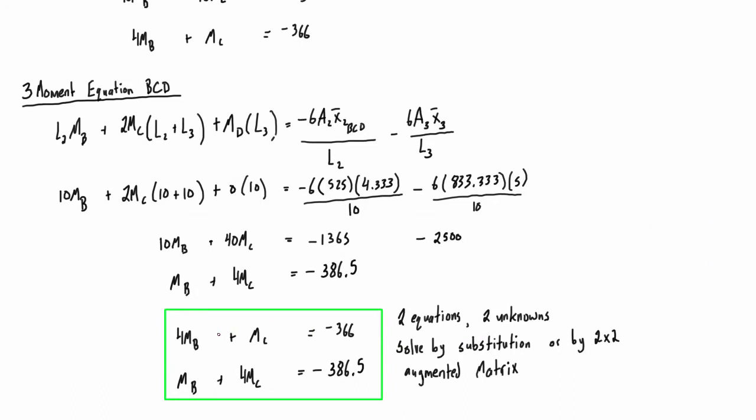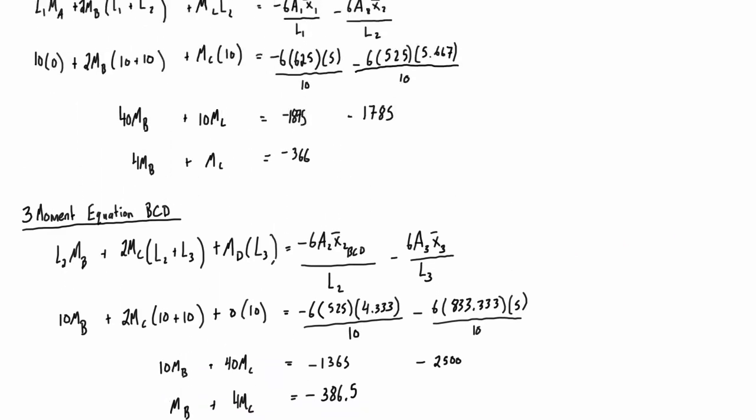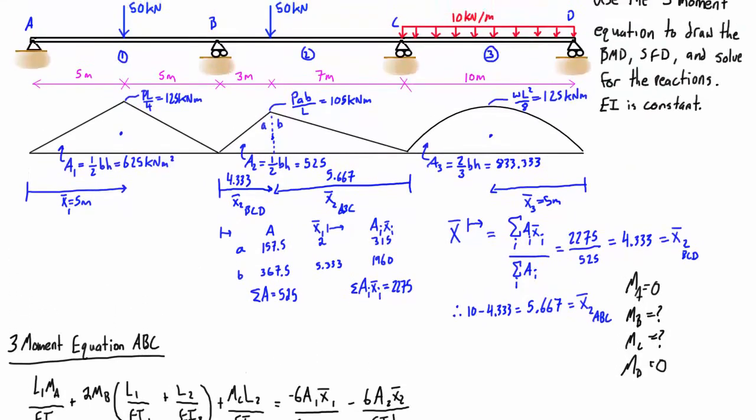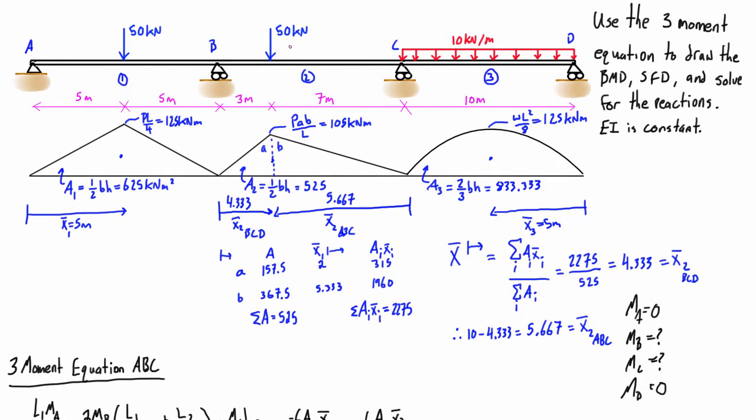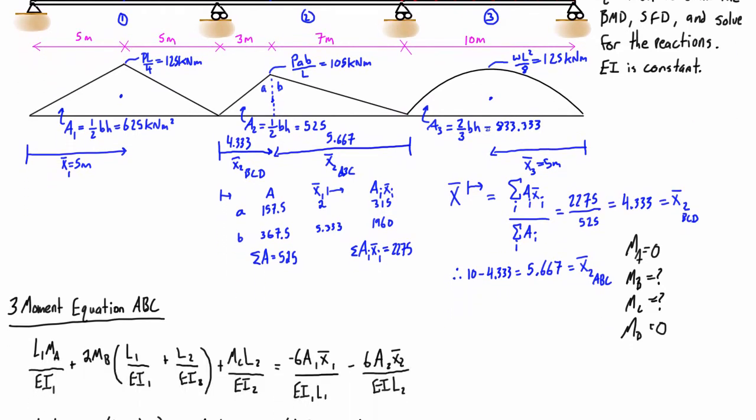Picking up right where we left off, we just found the expression where we have two equations and two unknowns for the internal moments of B and C. Just a quick recap of what we did: we had this beam up here, a 3-span beam with a couple different loadings on it. First we drew the simply supported bending moment diagrams that would be supporting those given loads. From there we found the areas of these and their distances of their centroids from the outsides when we're applying the 3-moment equation.